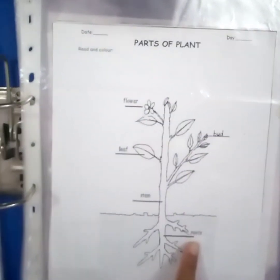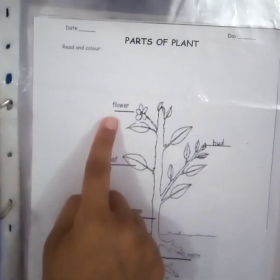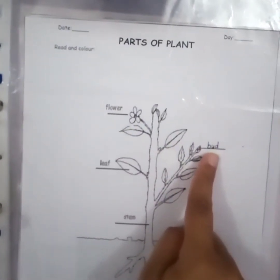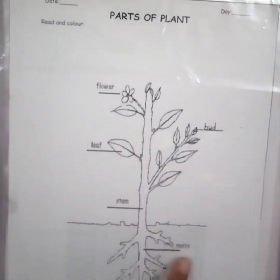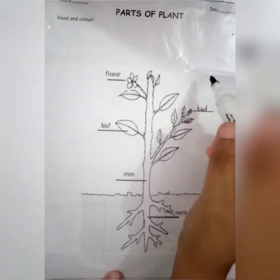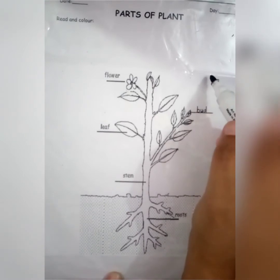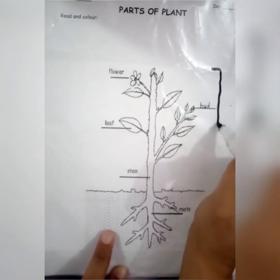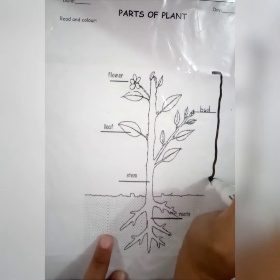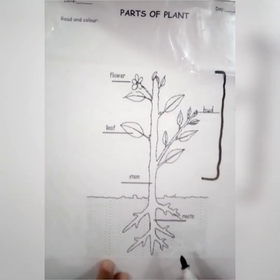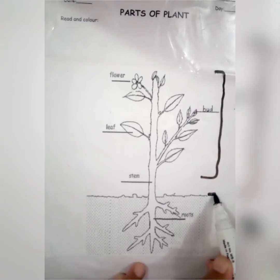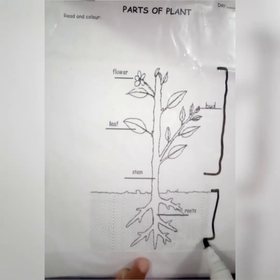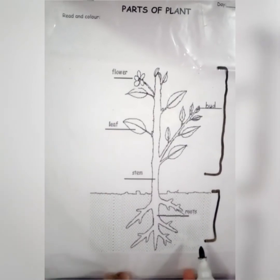Let's recall one more time: flower, bud, leaf, stem, roots. Parts of the plant which we can see above the soil are called the shoot of a plant. Parts of the plant which we cannot see and are present below the soil are called the root of a plant.